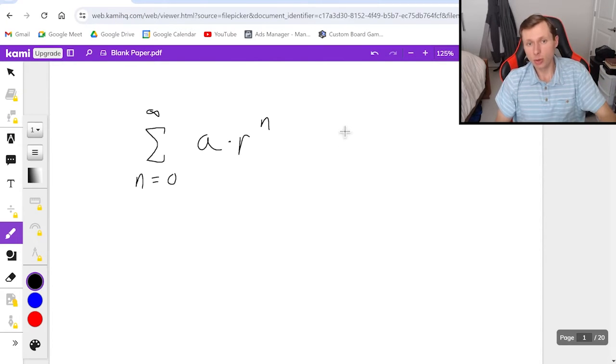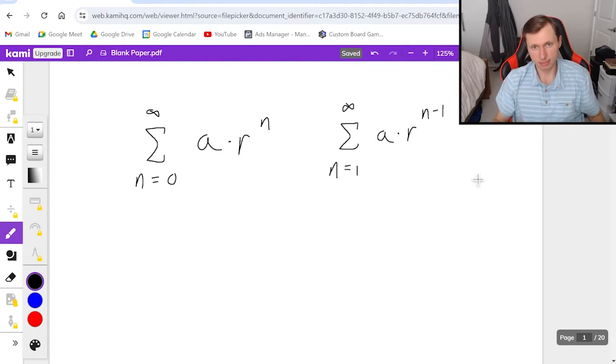By the way we also do have a version of geometric series that do start at one. But the form looks slightly different. It looks like a times r to the n minus one. And I would recommend having these two forms memorized.